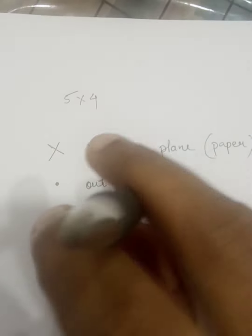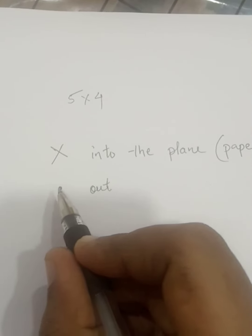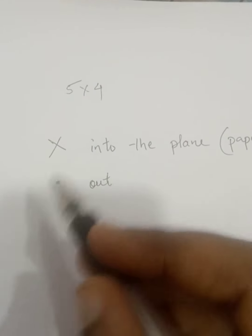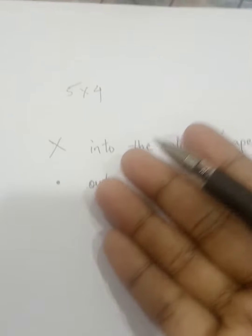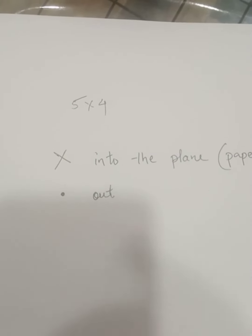This is the out word. This is the dot. This is the into and dot — this is the opposite. We put this symbol into the plane.